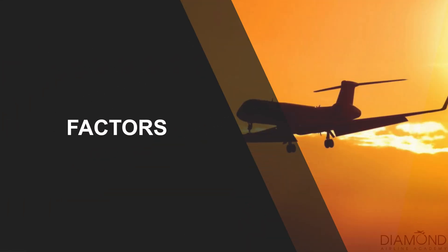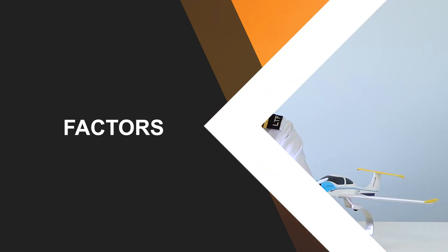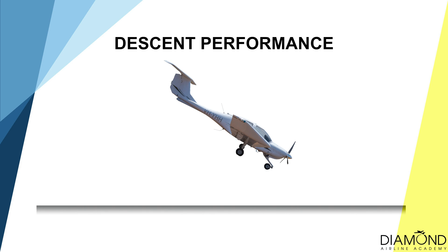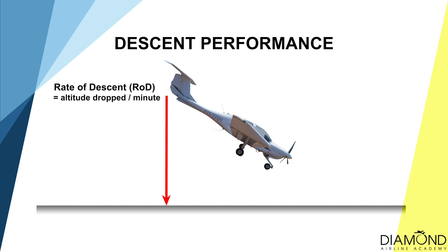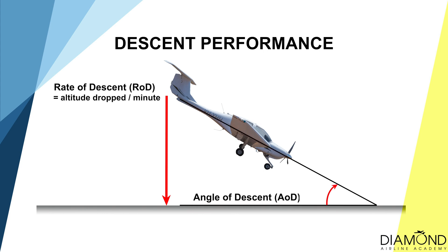During a descent, there are different factors affecting descent performance. It's good to know what they are so we can make adjustments in flight. Similar to climbing, there are two main indications to judge descending performance: the first is rate of descent, which is in feet per minute; the second is angle of descent, which is in degrees.